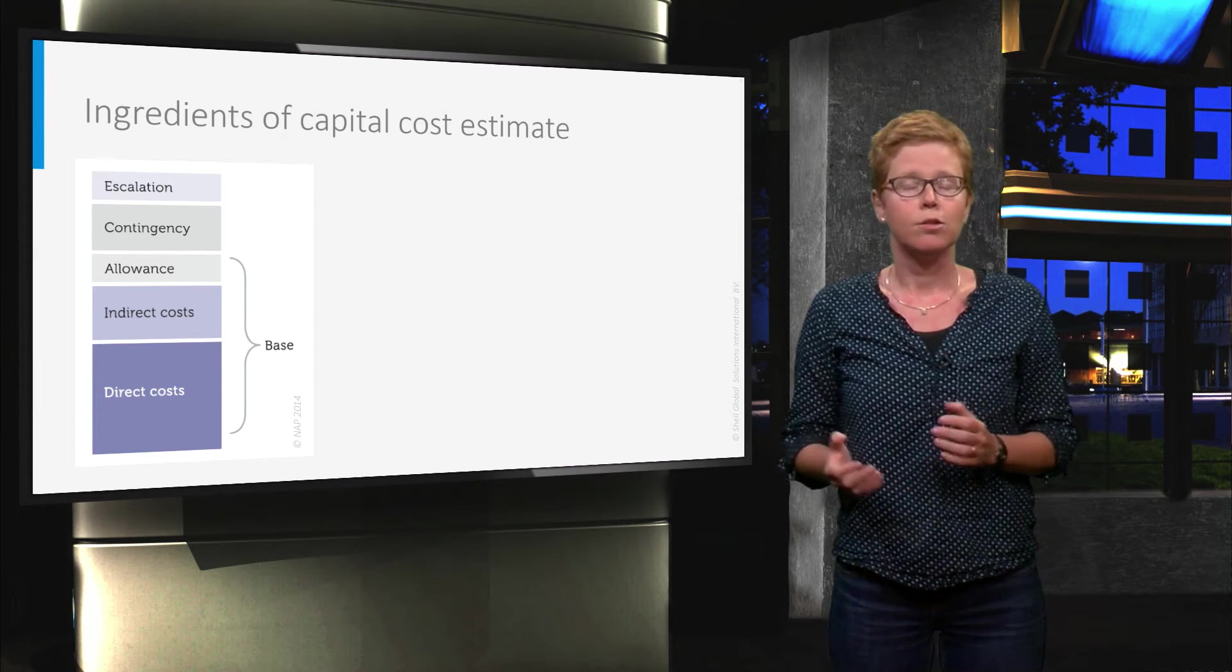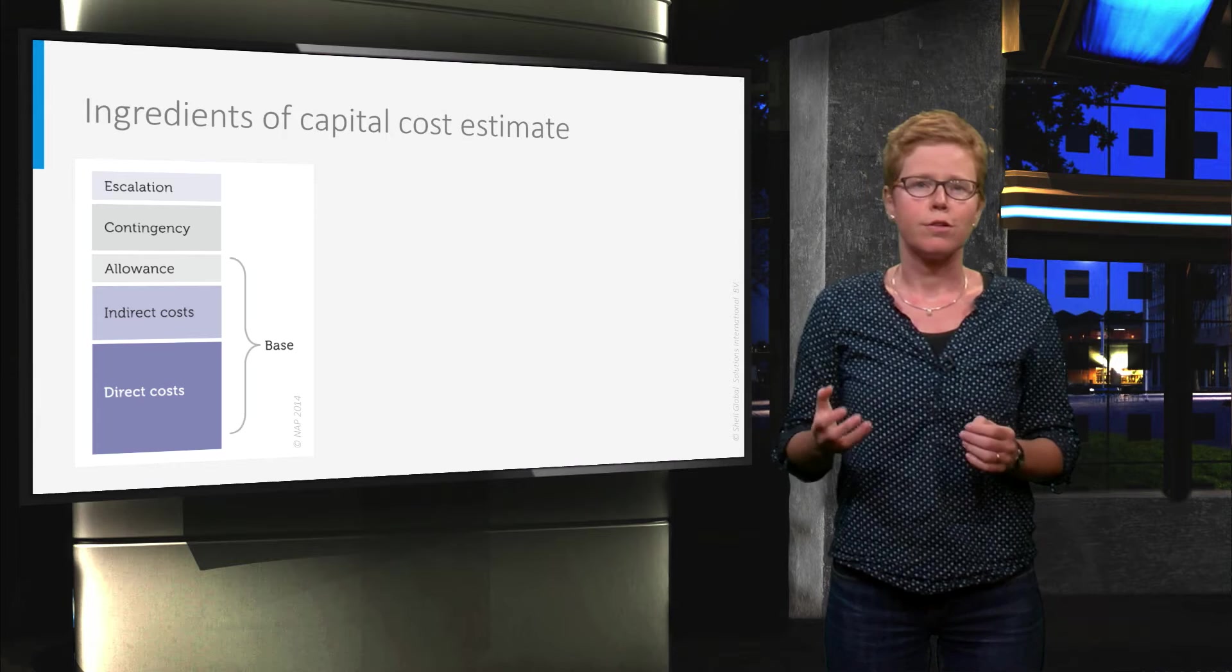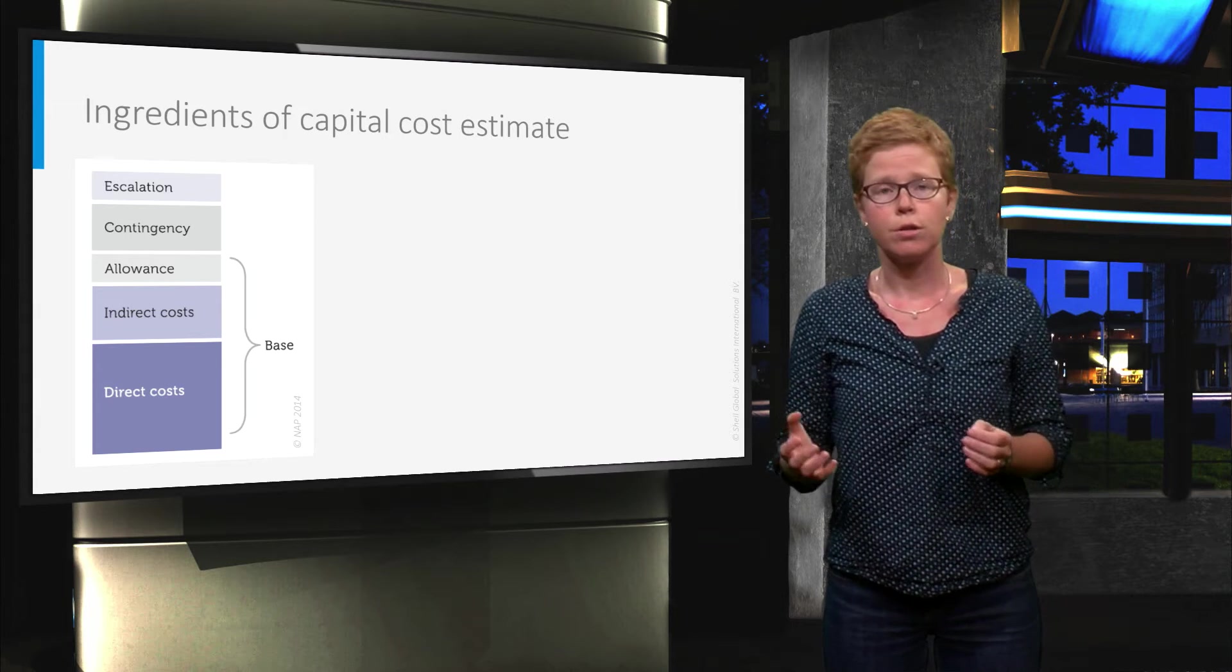And on top of these direct and indirect costs, allowance can be added to the base estimate, to cover uncertainties in the scope of work, the so-called known unknowns.